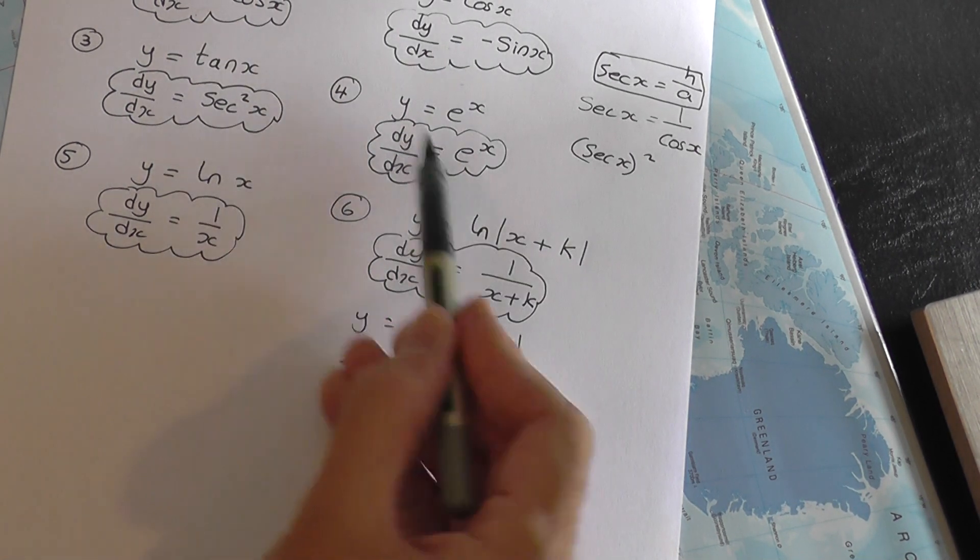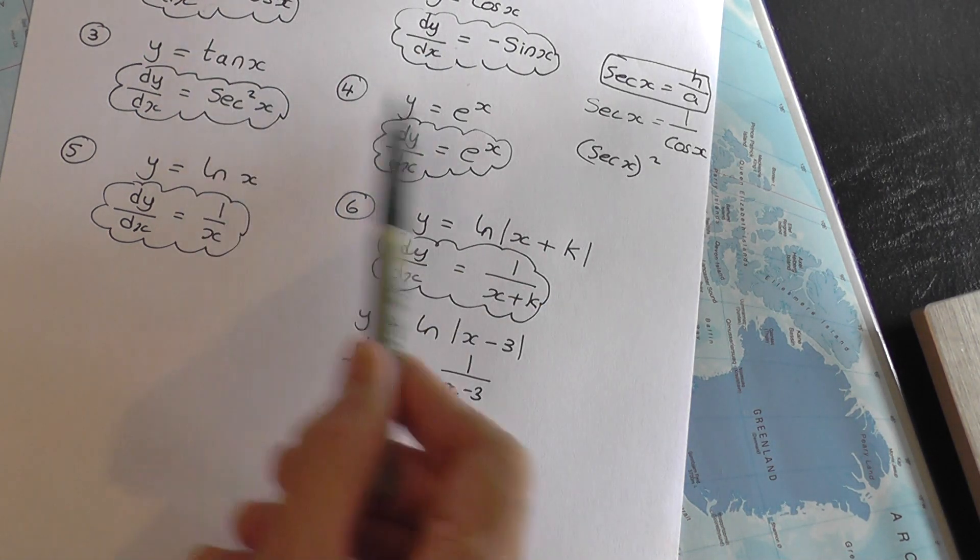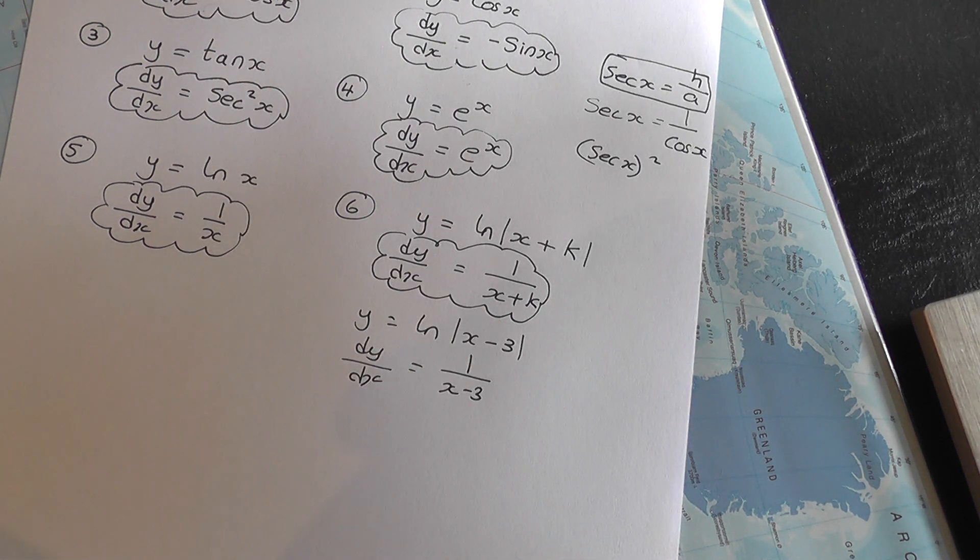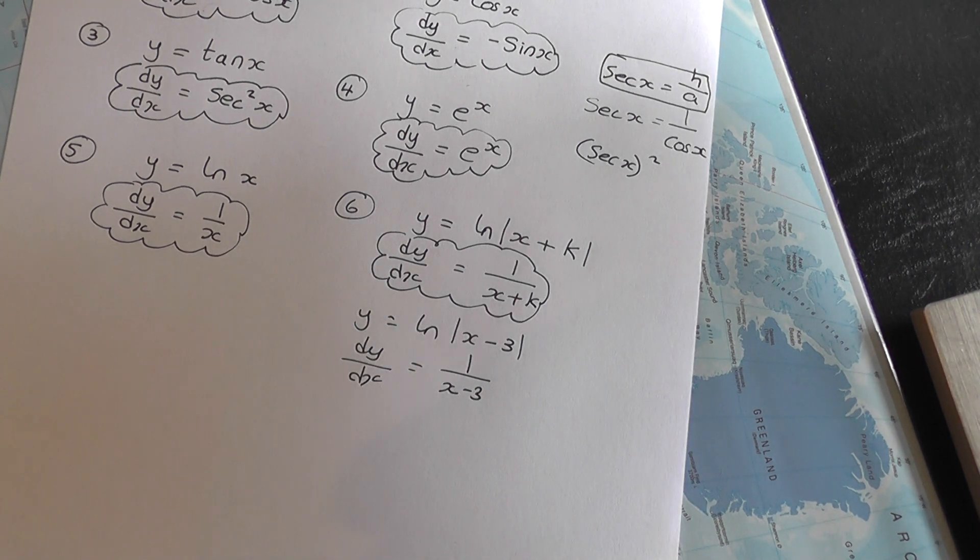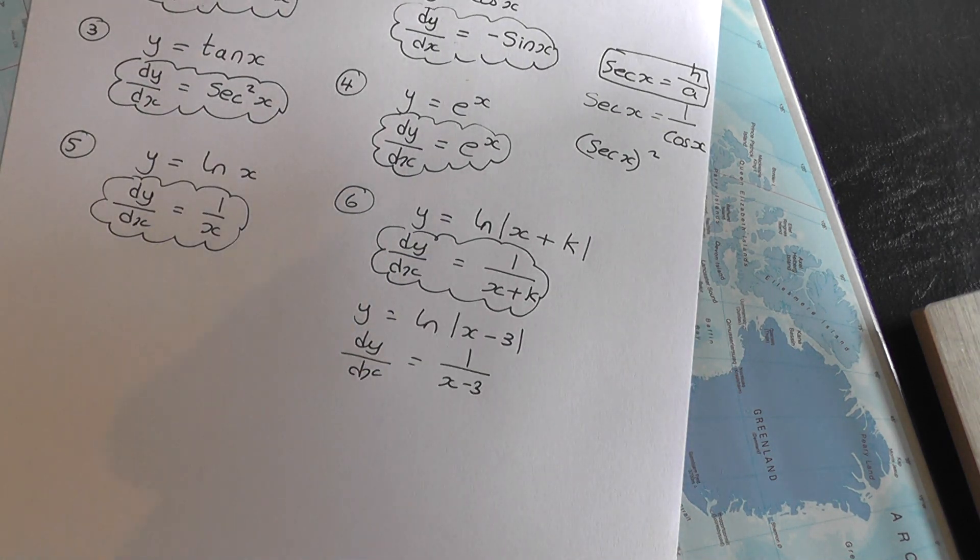There are six standard results in this little video, and you need to be happy that you can quote these at any point in time. The first two you'll need to be able to prove from first principles for your year 13 exam. The others you just learn off by heart. In the next video, we'll have a look at how we can possibly combine these standard results with either the product rule or the quotient rule.